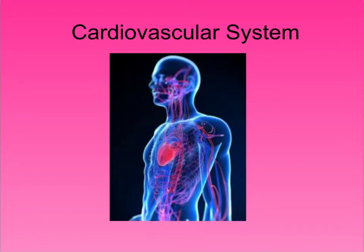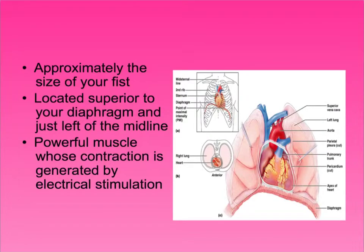The cardiovascular system — we're talking about the structures, layers, and stuff of the heart. The heart is about the size of your fist, located pretty much right below your sternum, in the middle of your chest, but it leans slightly to the left because that side is a little bigger. It's a very powerful muscle and its contraction is generated by electrical stimulus.